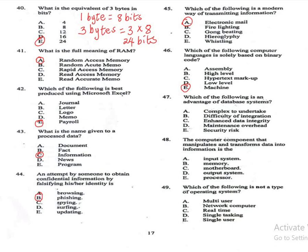Question 47: Which of the following is an advantage of database systems? A: complex to undertake, B: difficult integration, C: enhanced data integrity, D: maintenance overhead, E: security risk. The correct answer is C, enhanced data integrity. Question 48: The computer component that manipulates and transforms data into information is — A: input system, B: memory, C: motherboard, D: output system, E: processor. The correct answer is E, processor.